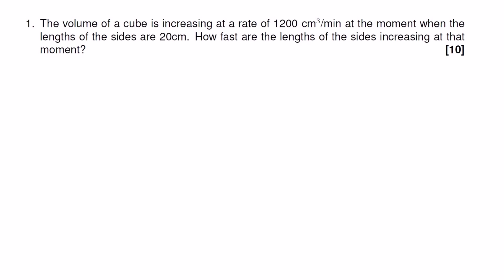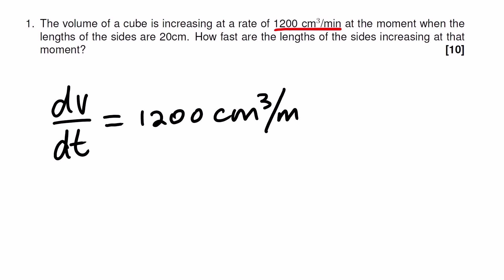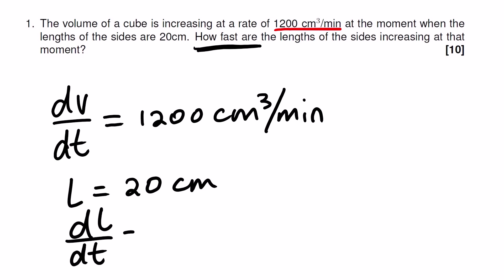Now we return to this question and analyze what we are given. From the problem, we have dV over dt which equals 1200 cm³ per minute. At the moment when the length of the sides is 20 cm. The question asks how fast the lengths of the sides are increasing — 'how fast' means it is a derivative, specifically dL over dt. That is what we are looking for.